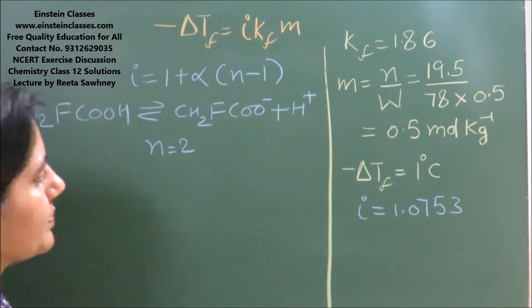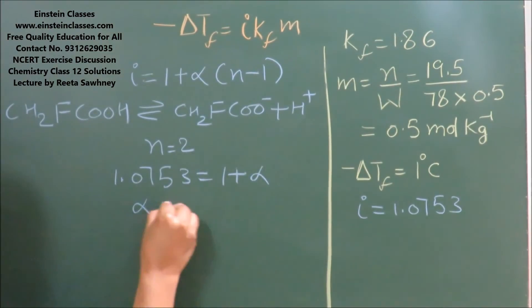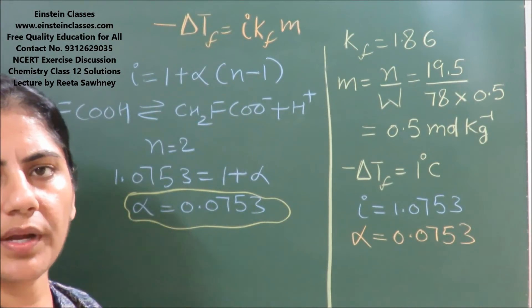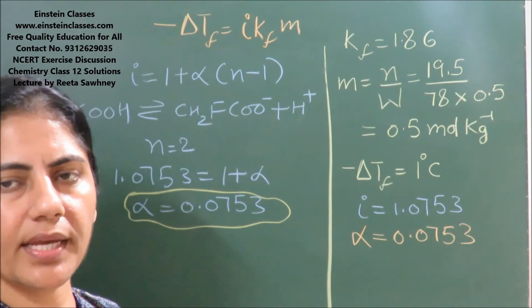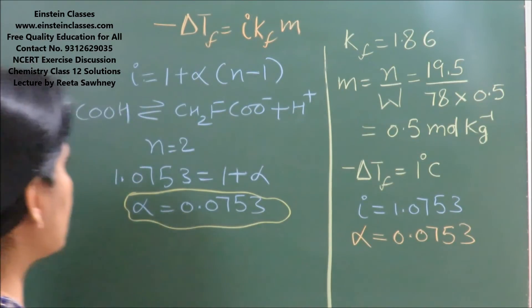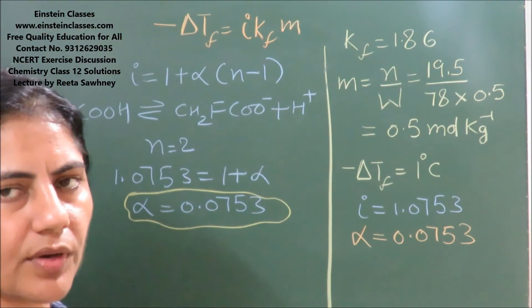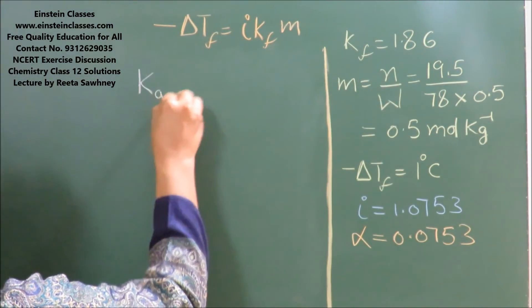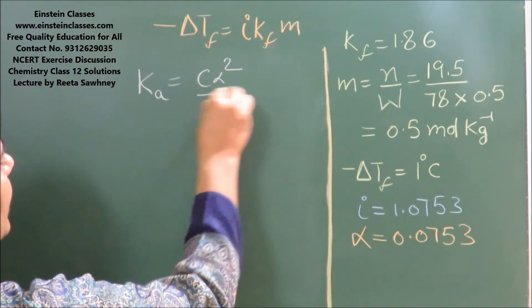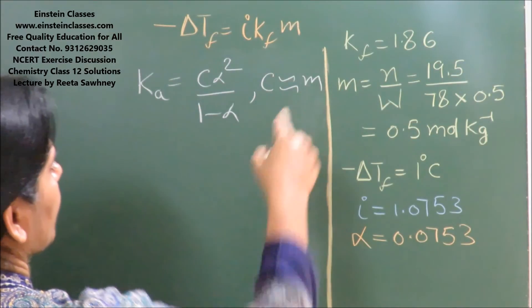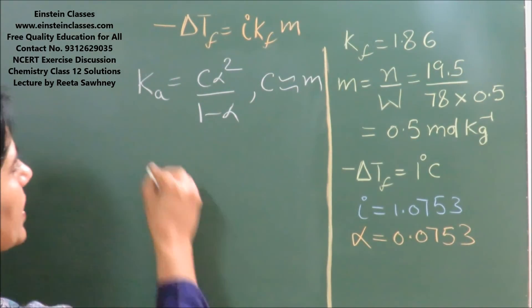Our aim is to find out the ionization constant of the acid, that is Ka. We know that for weak monobasic acid, the relation between α and Ka is: Ka = α²c/(1 - α), where c is approximately equal to molality. We are taking molality approximately equal to molarity.